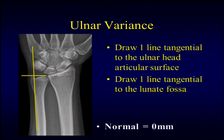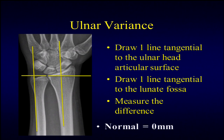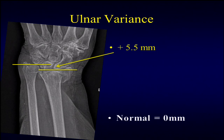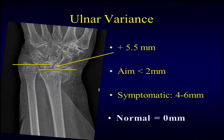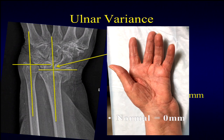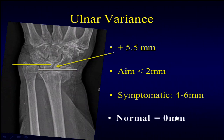For ulnar variance, you draw lines tangential to the surfaces of the ulnar head and the ulnar aspect of the distal radius. Most patients should be about 0 millimeters; plus or minus 2 millimeters is usually my standard. In this patient we can see about 5.5 millimeters of prominence of the ulnar head, which will lead to ulnar abutment. You can see how prominent that ulnar styloid is. Anything above 2 millimeters pushes me towards operative, and 4 to 6 millimeters will definitely cause symptoms. You can also discuss with the patient treating nonoperatively first and returning for a DRUJ procedure.